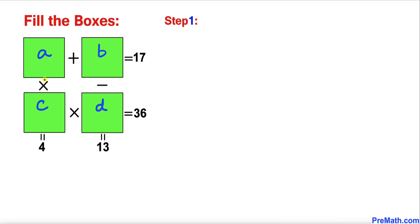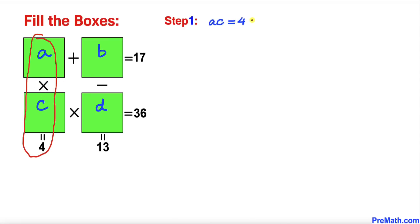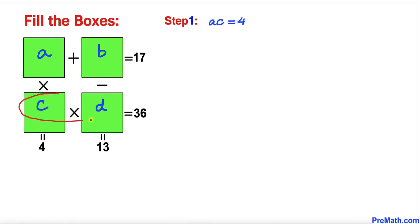Let's focus on the multiplication operation first. When we multiply these two boxes we get A times C equals 4. Likewise, focusing on these two boxes, C times D equals 36.